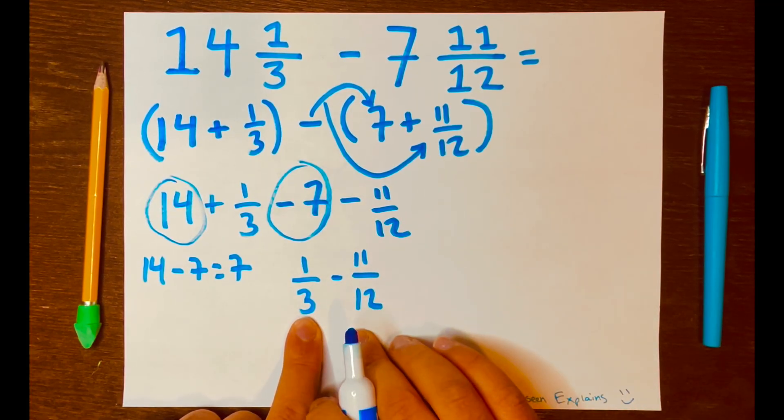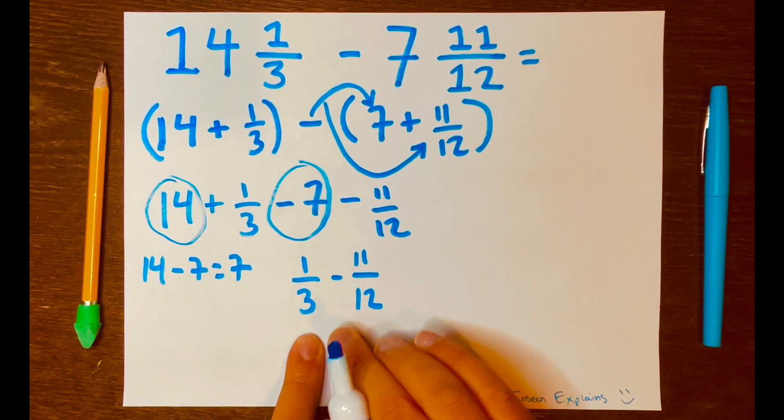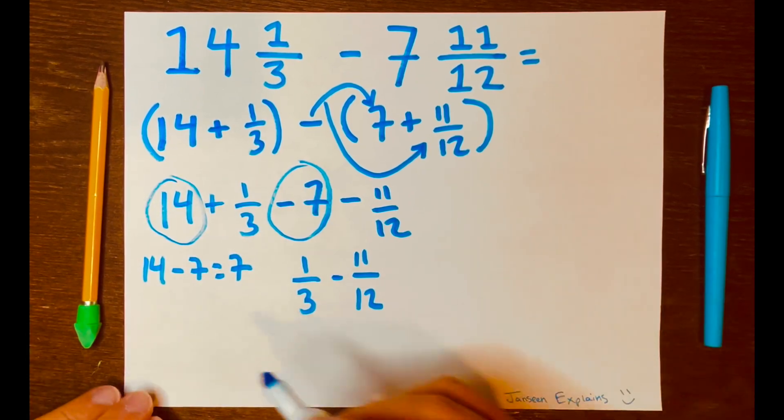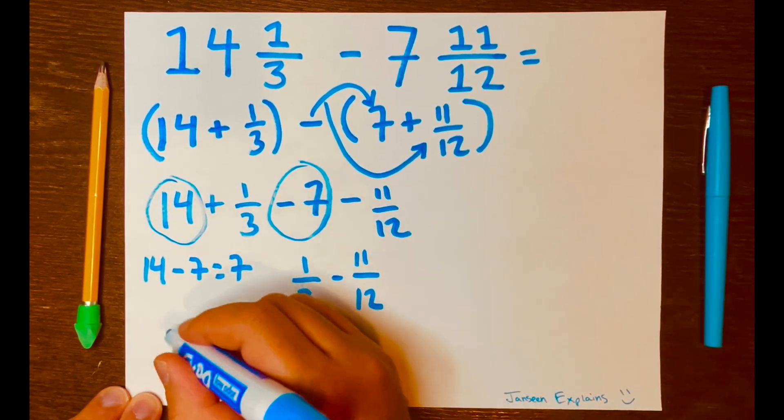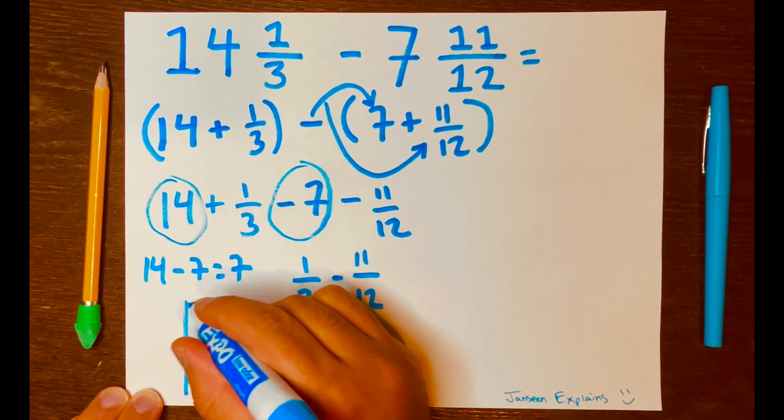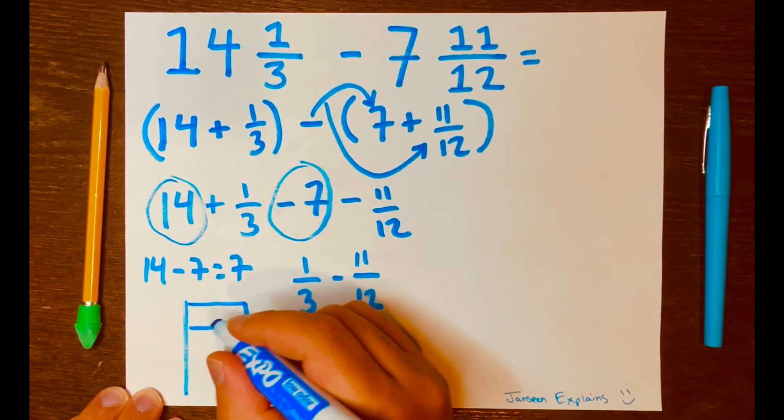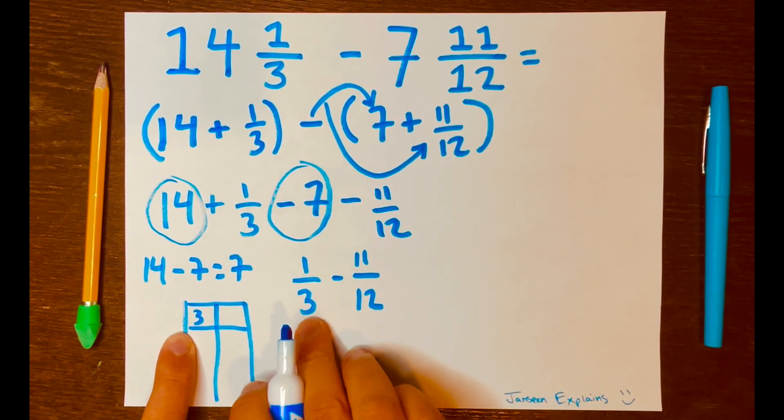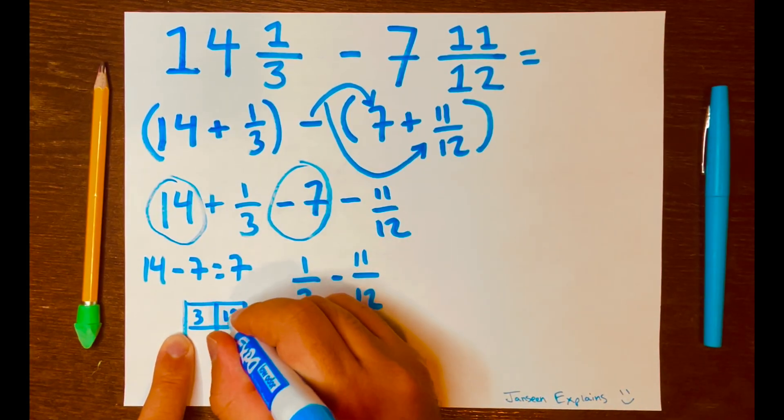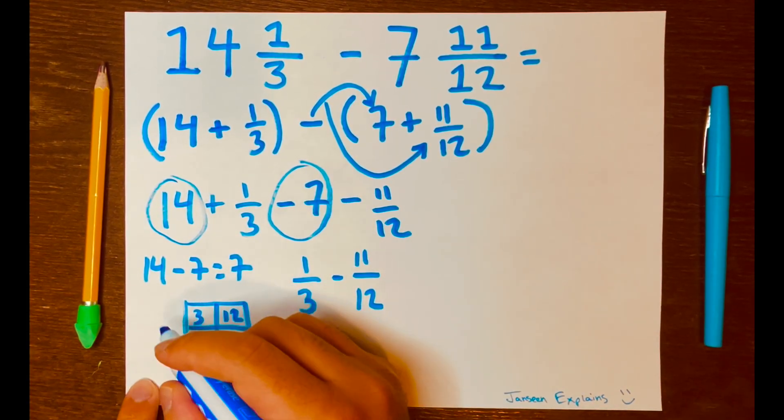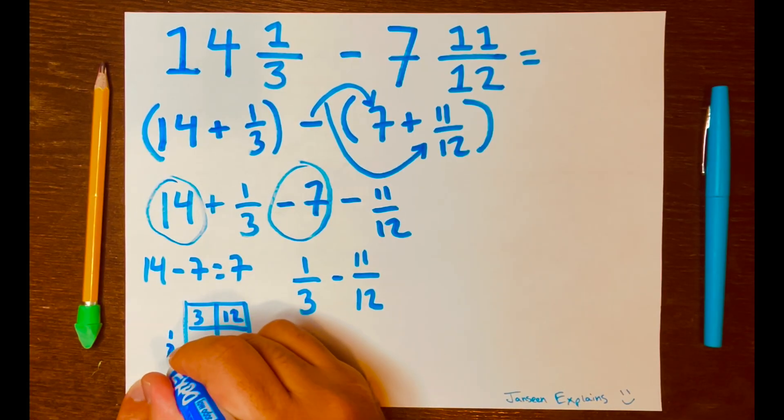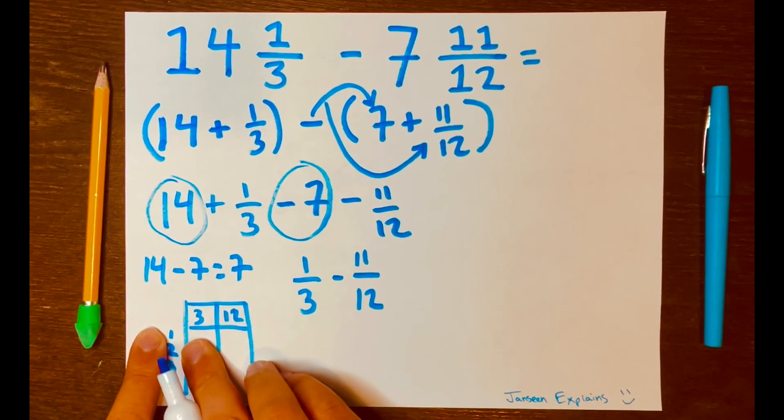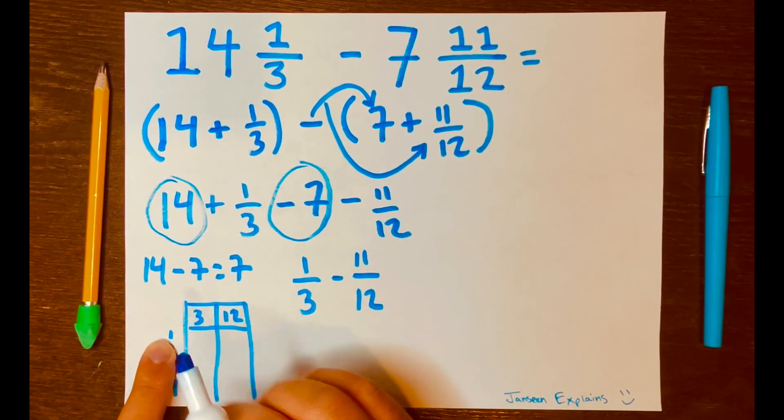The lowest common multiple is the smallest number that both the denominators can divide into. And we can make a multiple table, and we have space here, like this. And so, we'll write 3 for this denominator, and 12 for that denominator. And then we'll write the factors, 1, 2, 3, I'll stop at 4. And now, we just have to multiply the factor and the denominator.